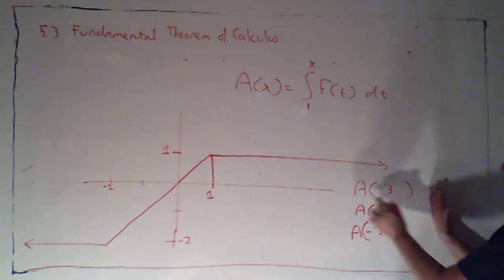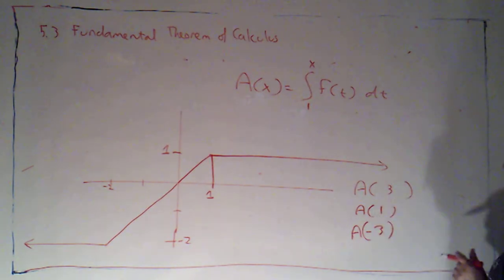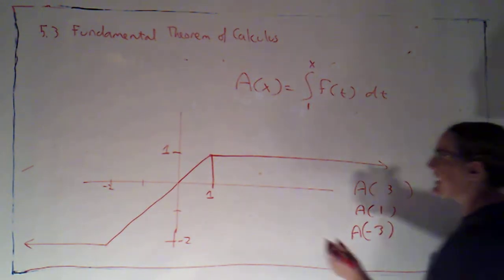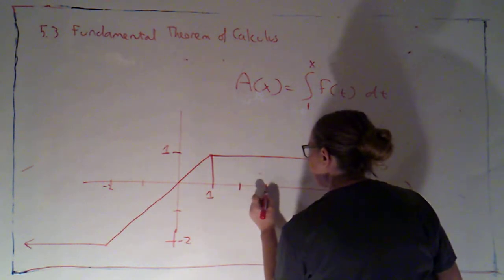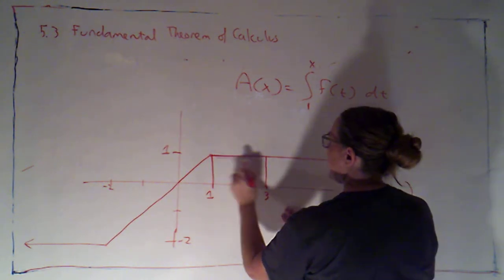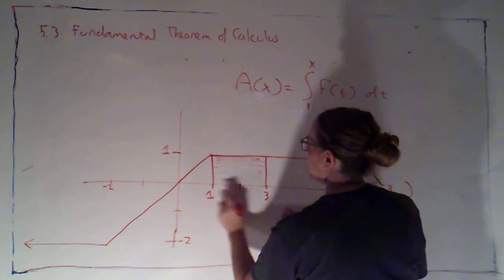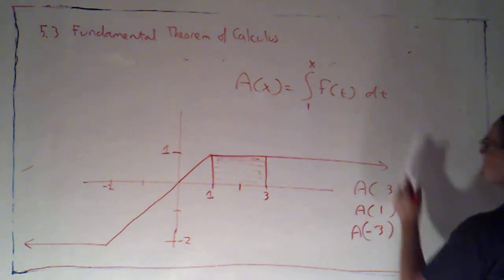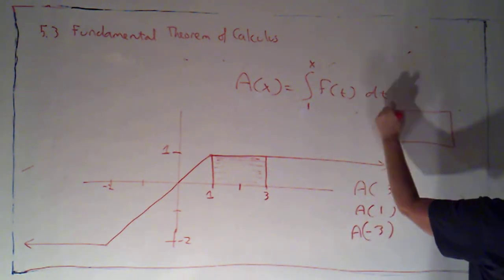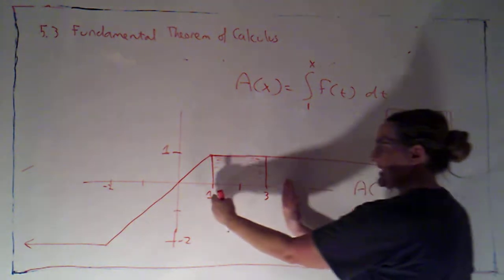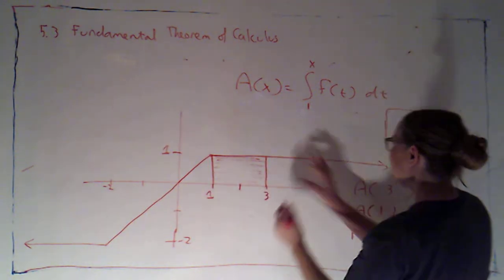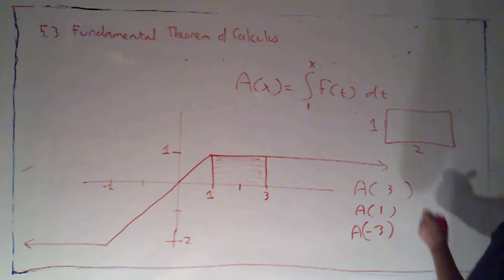And I asked you to evaluate these three signed areas. So we're looking at a of 3. We're looking at the area of just this rectangle right here. And I can see that that rectangle is going to have a base of 2 because that's the distance from 1 to 3, and a constant height of 1. So that's just going to be 2 times 1. That would be 2. Excellent.